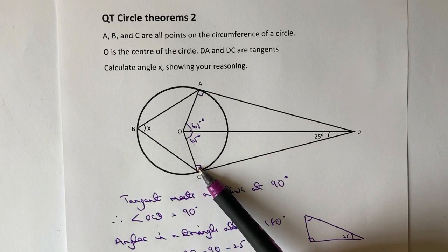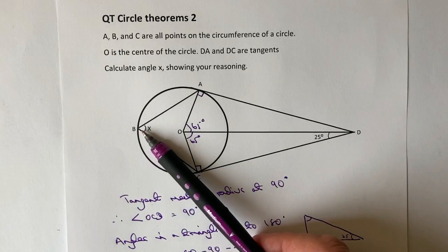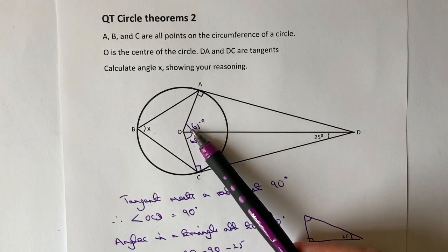And then the other circle theorem that you need to know is that the angle at the circumference of a circle is half the angle at the center of the circle.